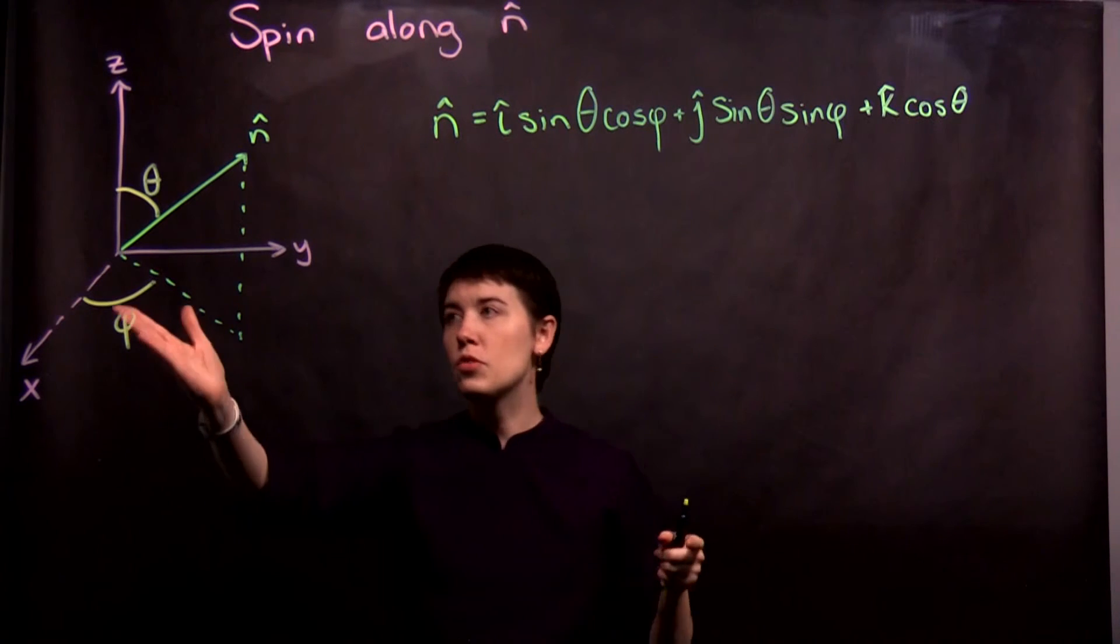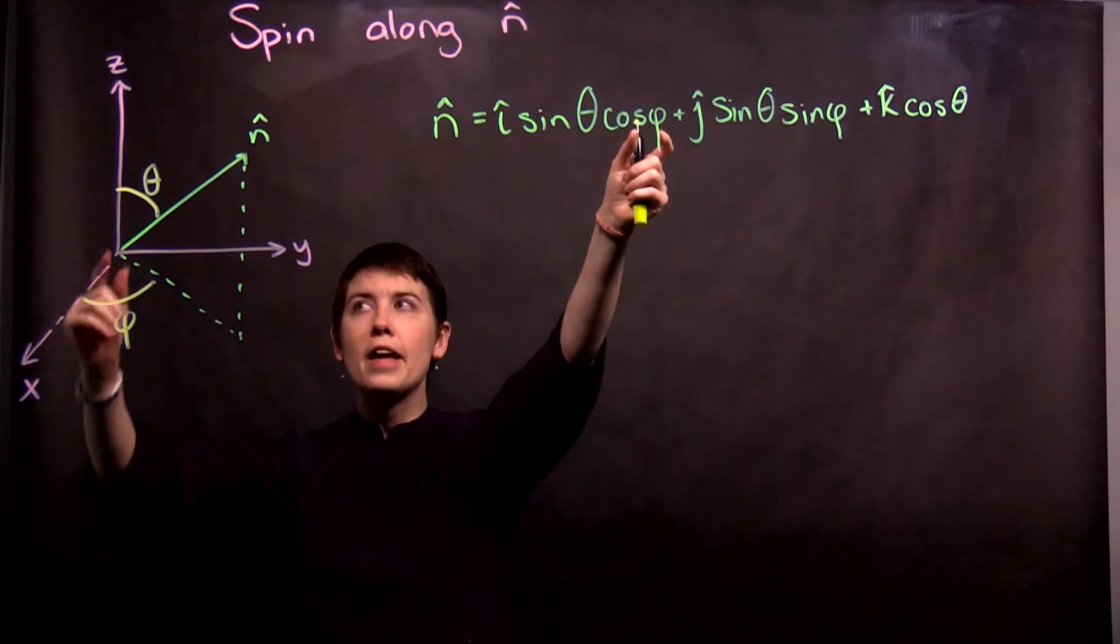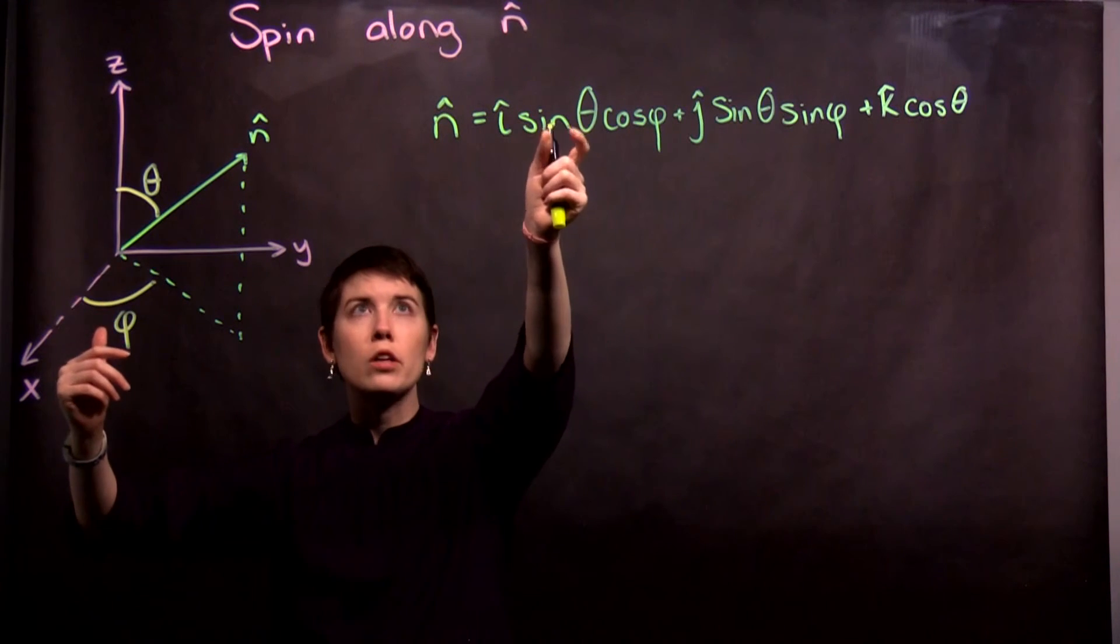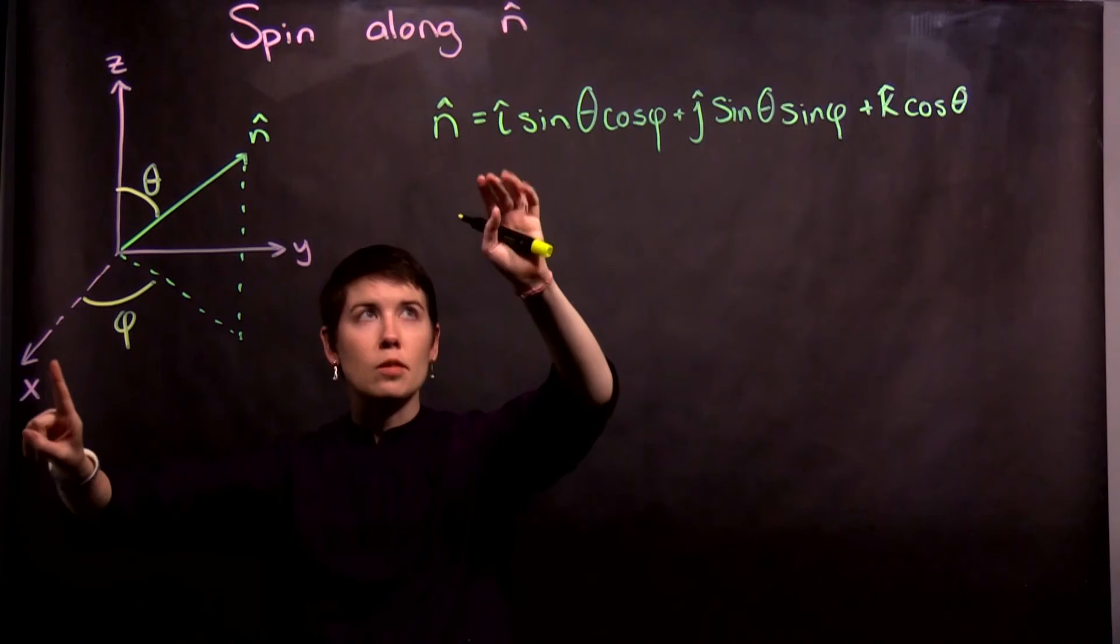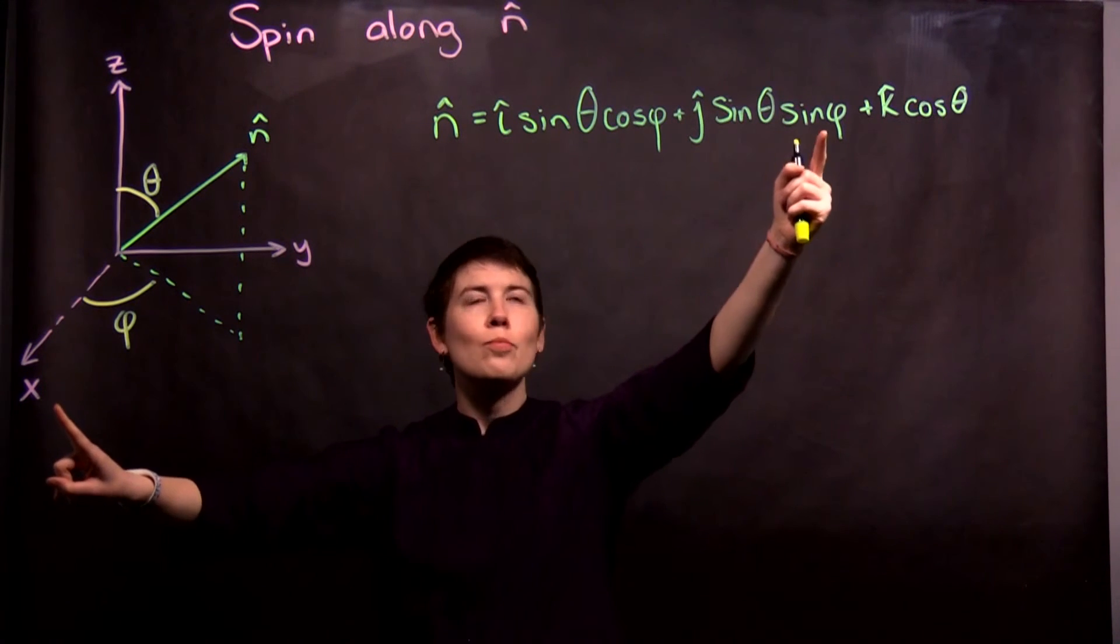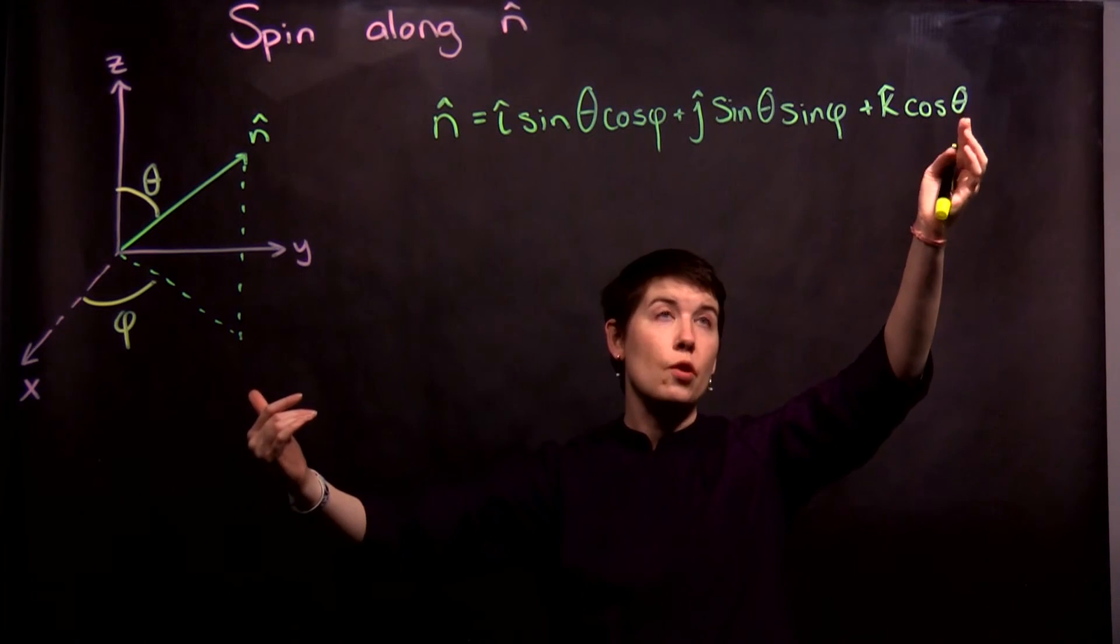Then we look at phi. So if phi is zero, this term is one. And if theta was, say, 90 degrees, or pi over two, this term is one. So n hat then becomes x hat. Sine of 90 is still one, but sine of zero then is zero. And then cosine of 90 is zero.